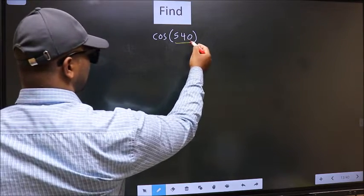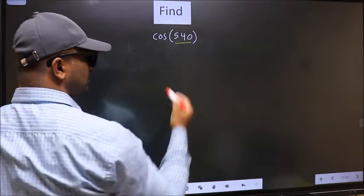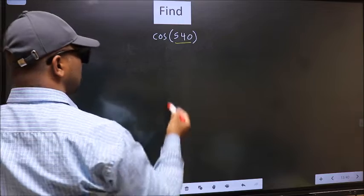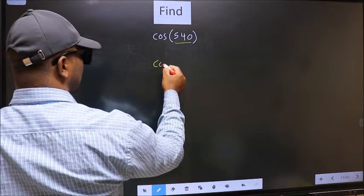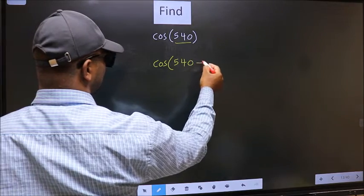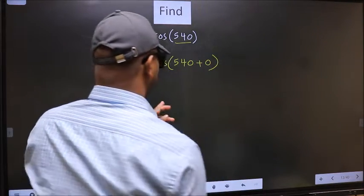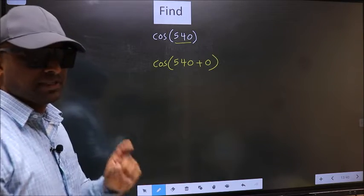Here we have 540. 540 is a multiple of 180. So in place of 540, now we should write 540 plus 0. This is your step 1.